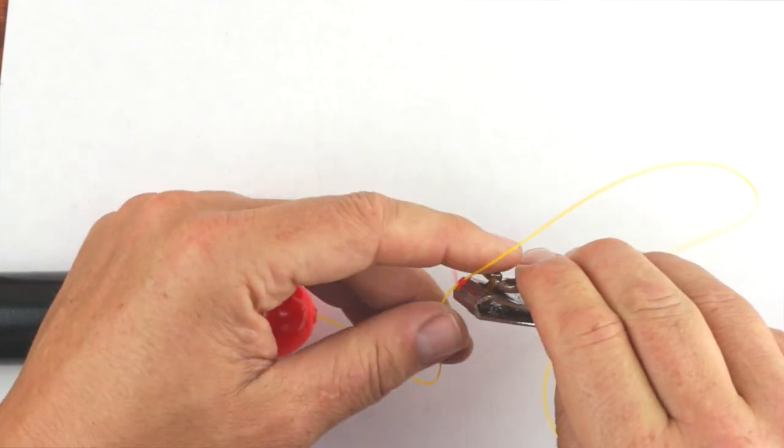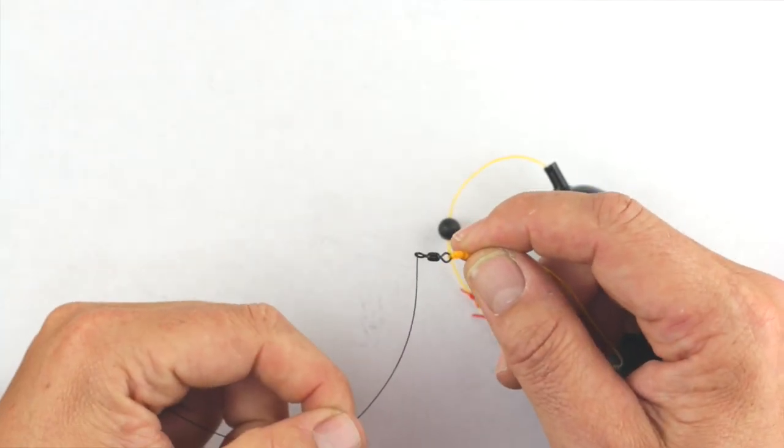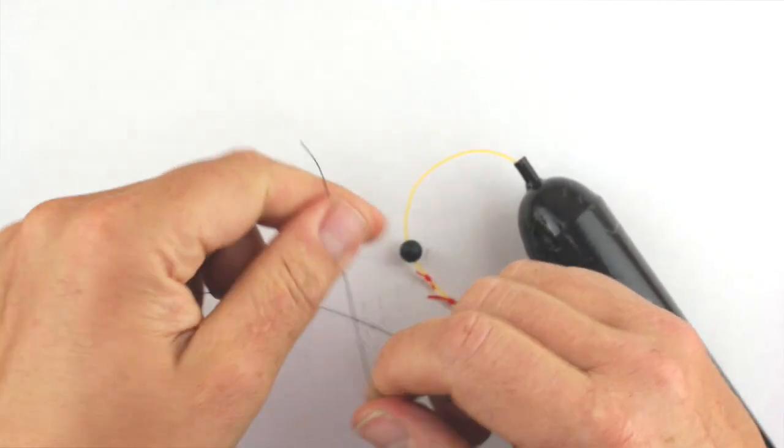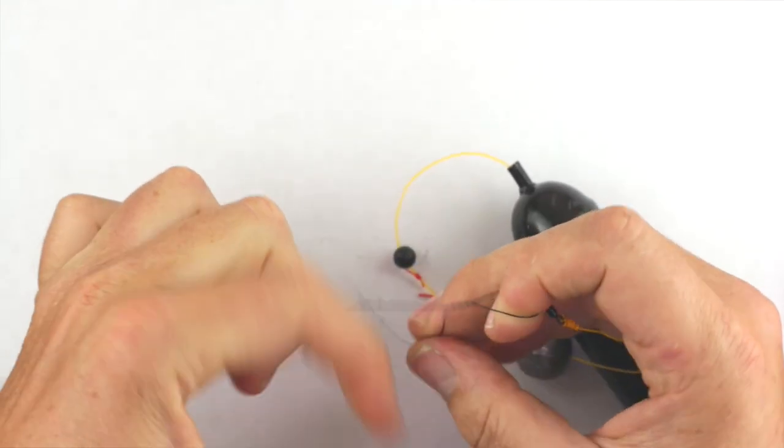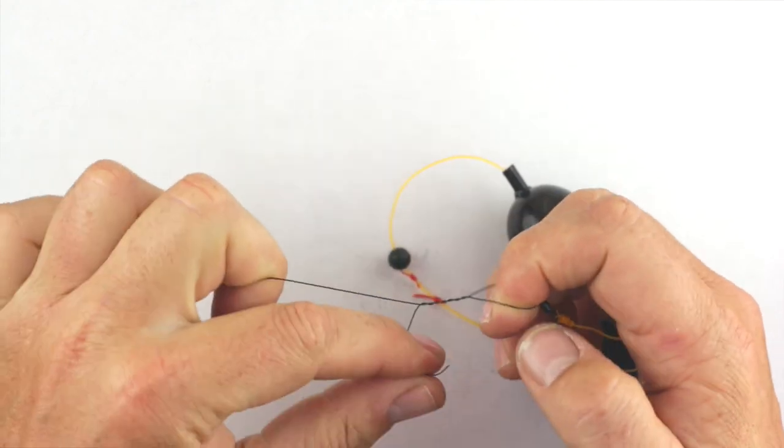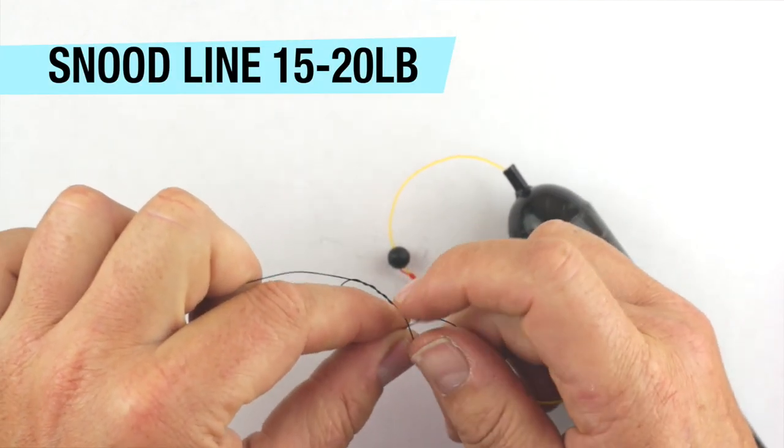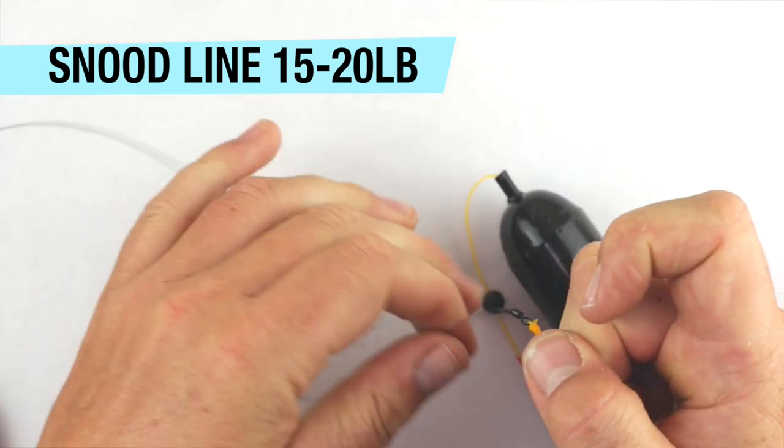So you're left with this swivel at the end, and that's for your snood. So you can carry a few different snoods with different size line and stuff like that. I tend to use a 15-20 pound snood line on this. This is amnesia. I'm using the black one here. Clear's probably better. Black just to show you in a video.